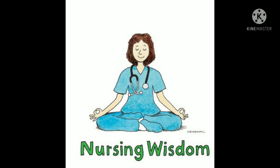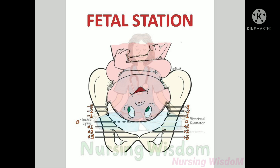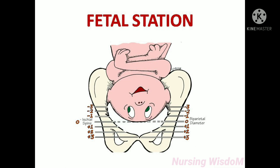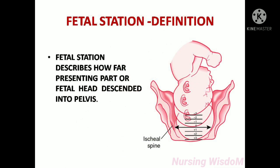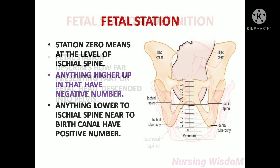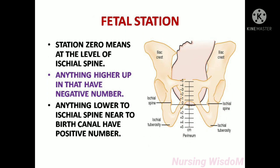Welcome to the Nursing Wisdom channel. Today we are going to see about fetal station. Fetal station describes how far the presenting part or fetal head has descended into the pelvis. Station zero means at the level of the ischial spine. Anything higher up has negative numbers; anything lower to the ischial spine, near the birth canal, has positive numbers.